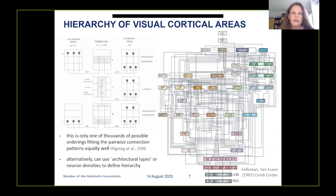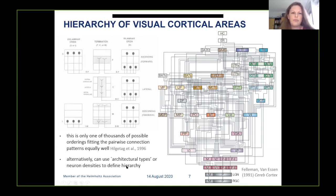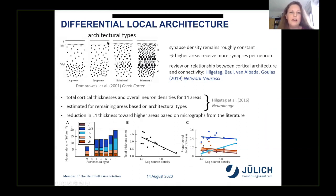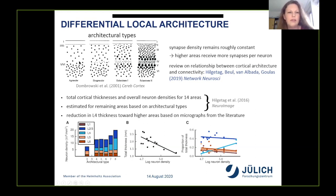Due to deviations from stereotypical laminar patterns, there is some indeterminacy in the positions of areas in the hierarchy. One way to resolve this is to define hierarchies based on the local cytoarchitecture. Architectural types characterize neuron density and the distinctiveness of lamination. Primary visual cortex V1 is a eulaminate area with distinctive layers, high neuron density, and a thick layer four. Going up the hierarchy, neuron density decreases and layer four becomes thinner, eventually disappearing in agranular areas. The volume density of synapses remains roughly constant, so higher areas receive more synapses per neuron.